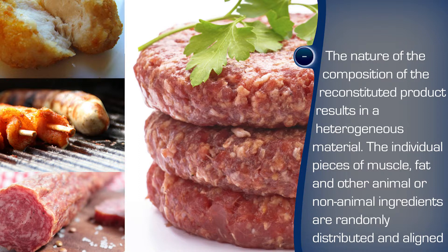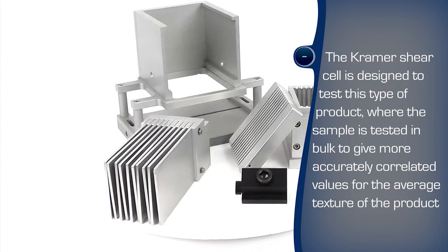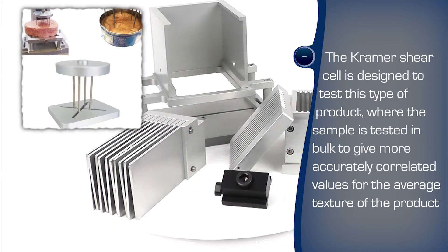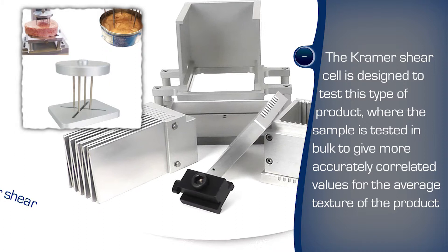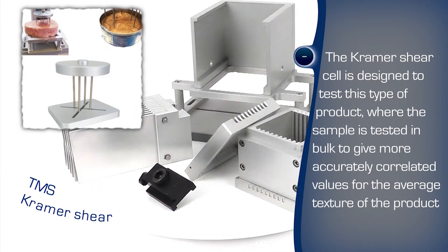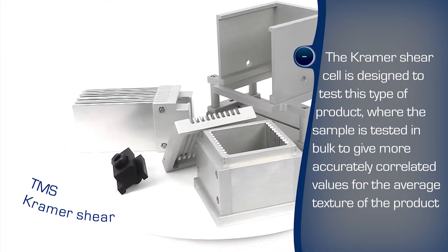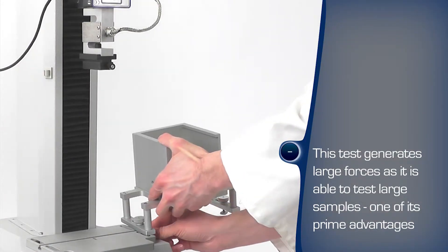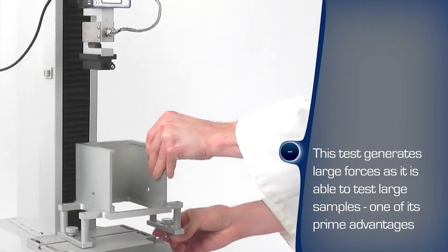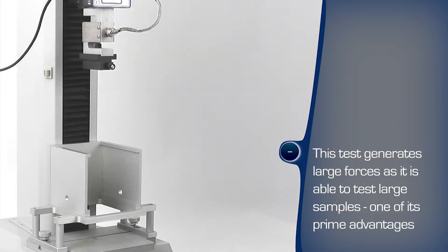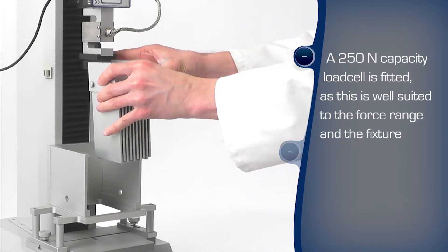A bulk analysis method is most suitable for a product of this nature — a heterogeneous mixture with the objective of being experienced as a homogeneous entity. Various test fixtures are available to investigate the average texture in a bulk sample. The TMS texture analyser is fitted with an FTC Kramer shear compression cell to compress, cut and slice through the burger as would the consumer.